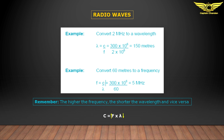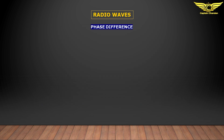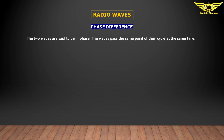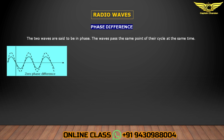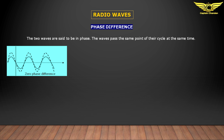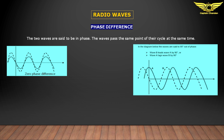Phase difference: two waves are said to be in phase when they pass the same point of their cycle at the same time. In the first example, both waves start at the same time in the same direction — zero phase difference. In the second example, both waves have a 90-degree phase difference. In the third example, the phase difference is 180 degrees.